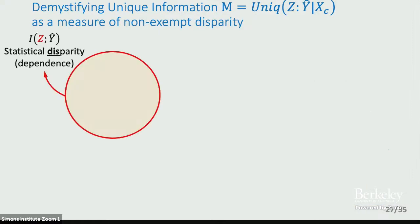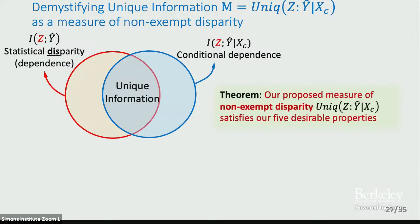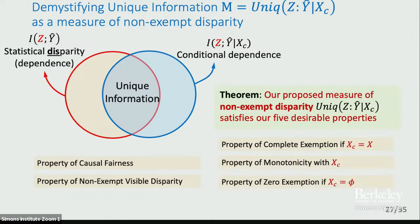To summarize: we started with statistical disparity as mutual information — the entire correlation between z and y-hat — but this does not allow exemptions for critical features. We tried conditional dependence, but conditional dependence lies outside mutual information and can be nonzero even when mutual information is zero. So we propose unique information as a candidate measure of non-exempt disparity, which satisfies several desirable properties as well as natural monotonicity properties that conditional mutual information doesn't satisfy. The monotonicity properties include: if all features are critical, the measure goes to zero; as you drop more features from the critical set, it monotonically increases; and if no feature is critical, it becomes the mutual information.